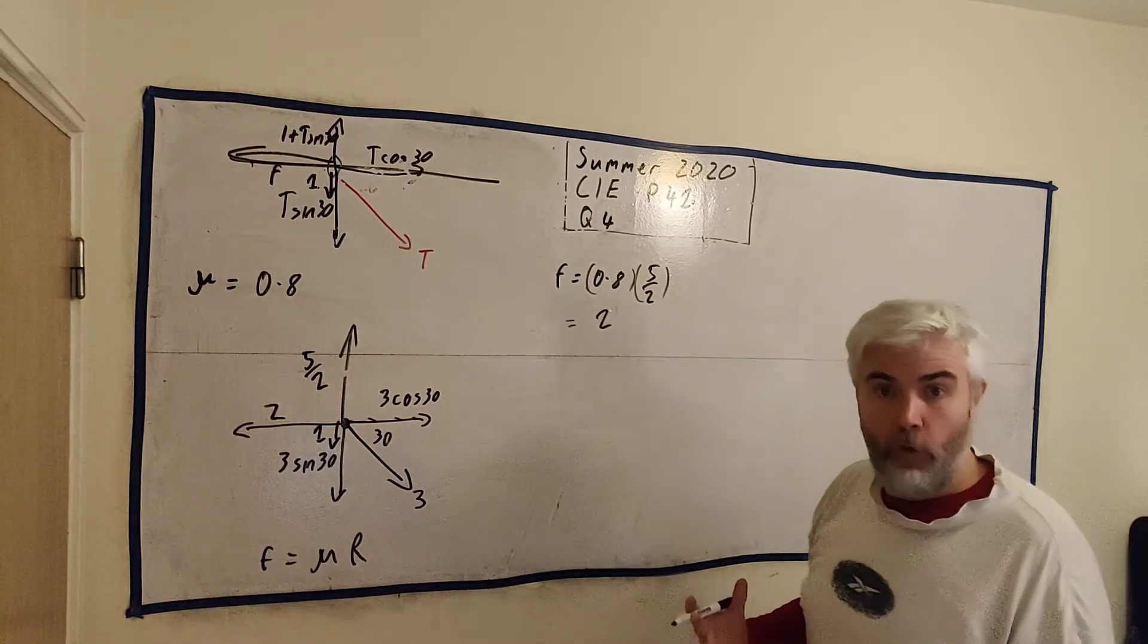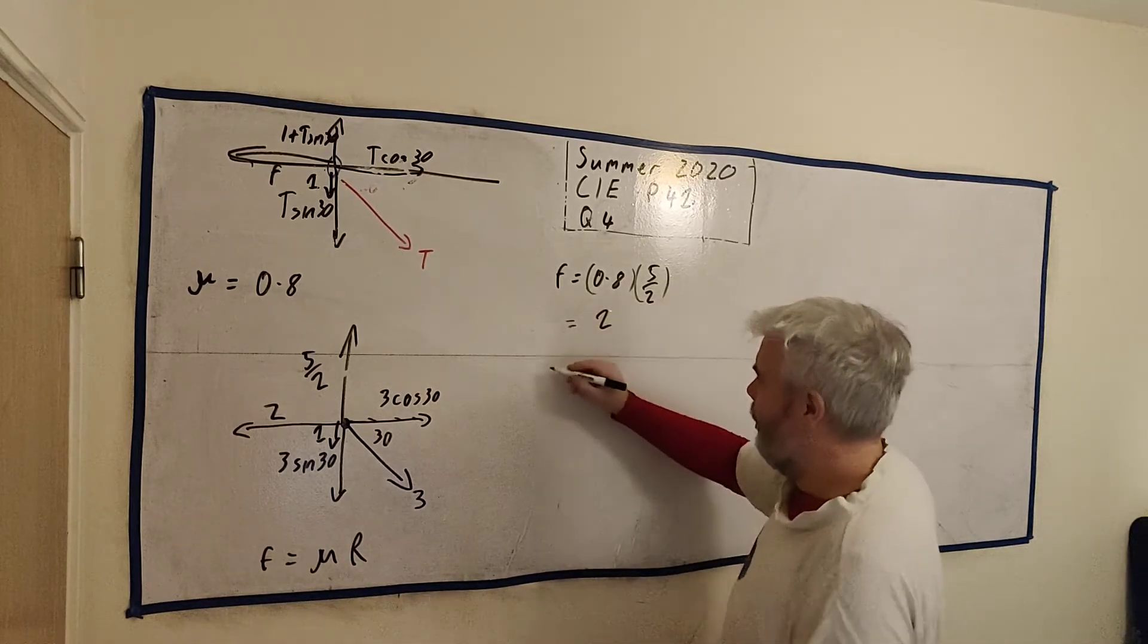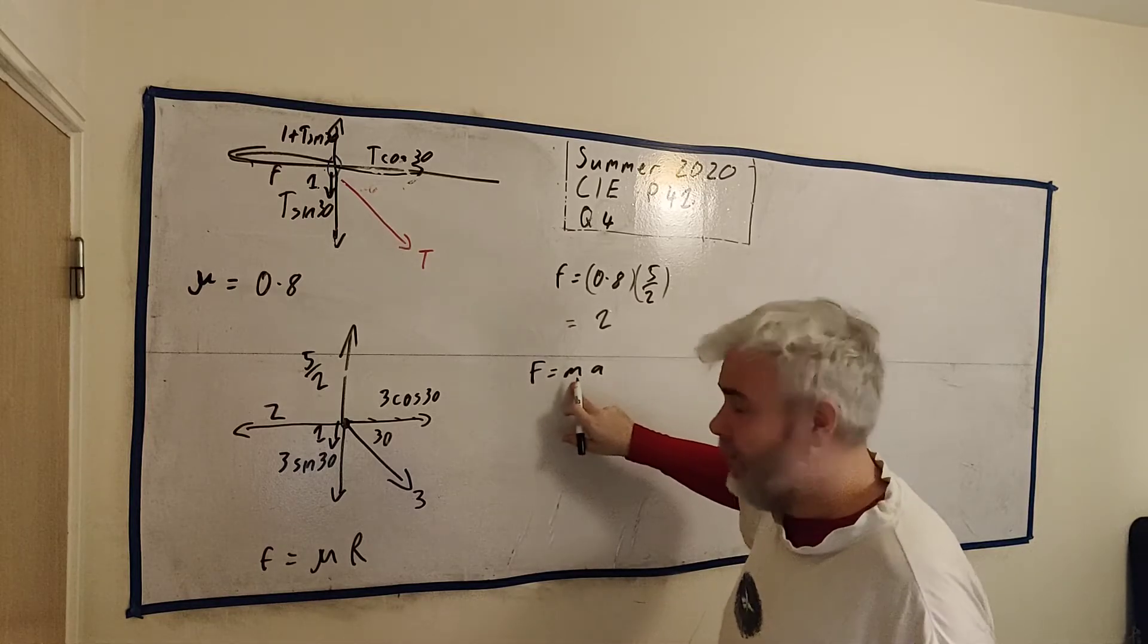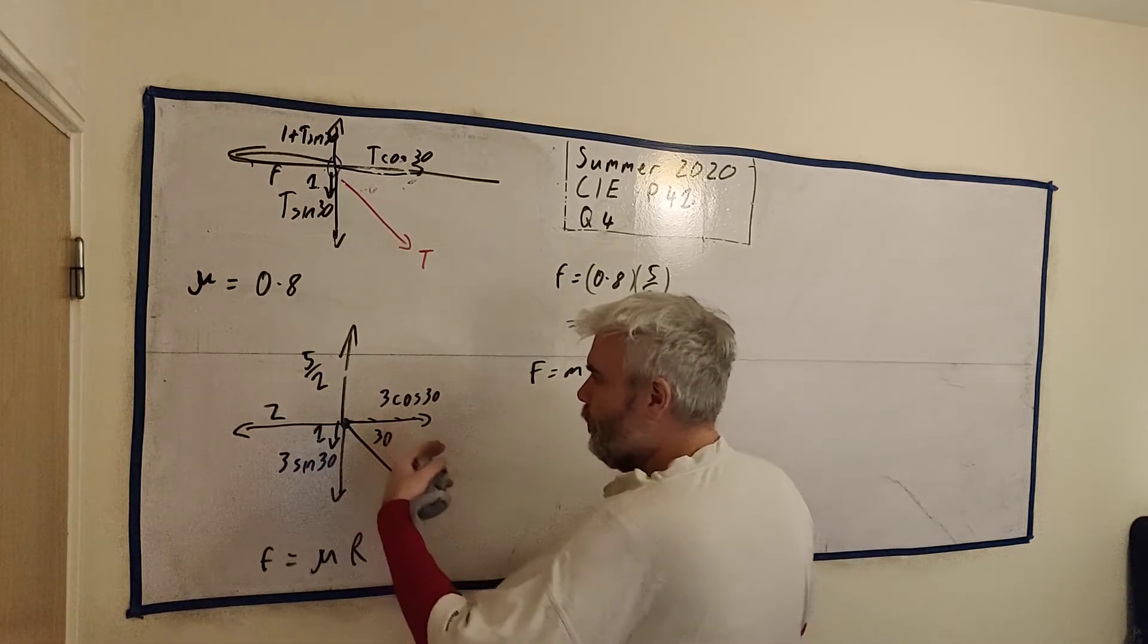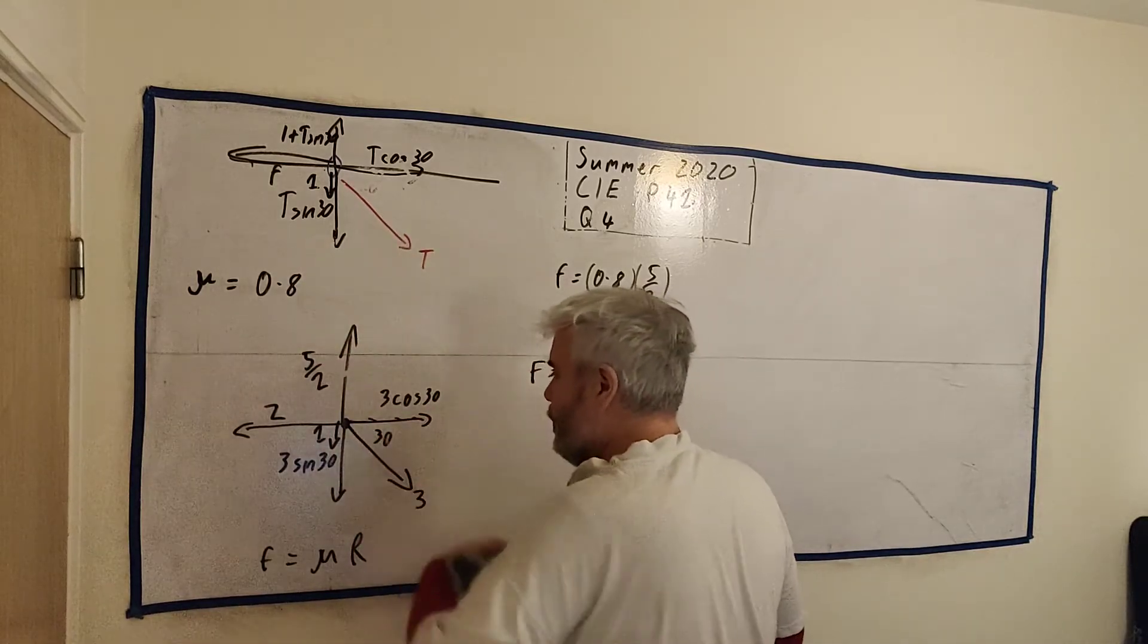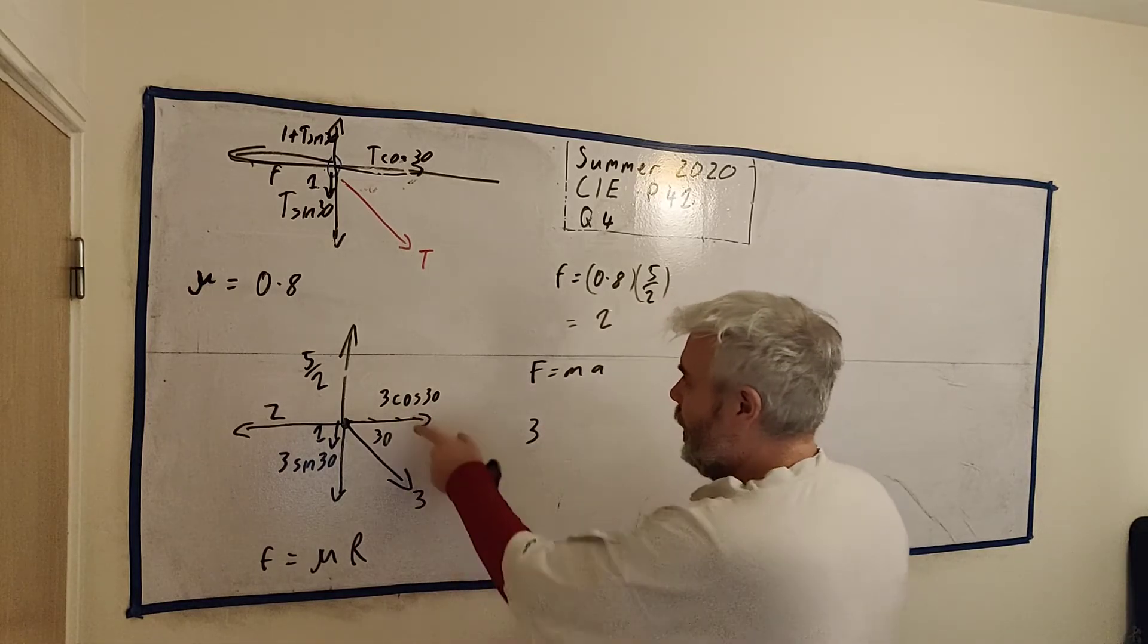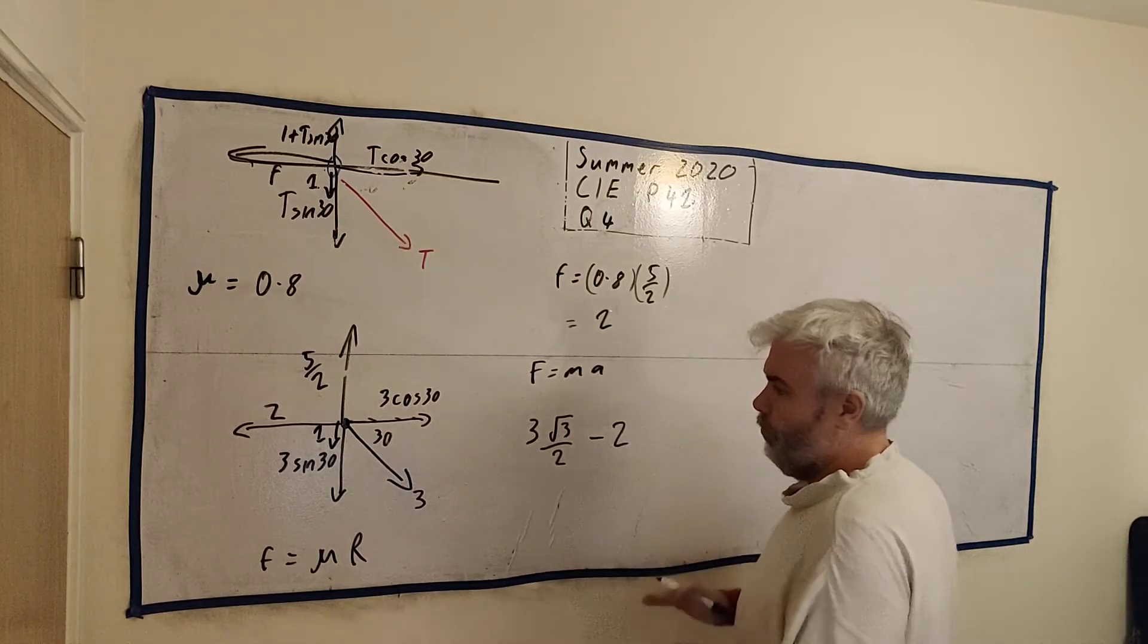5 times 0.8 is 4. 4 divided by 2 is 2. Put it on a calculator. Double check that. So let me just put it in here, then. 2. Okay, we want to know the total acceleration. So really, what for? Because acceleration would be F is equal to M A. We know what M is. We want A. So I need the force. What's the total force moving? I guess it'll be this direction.